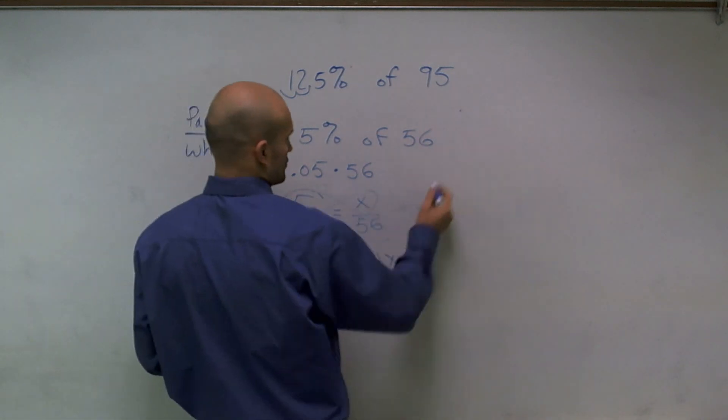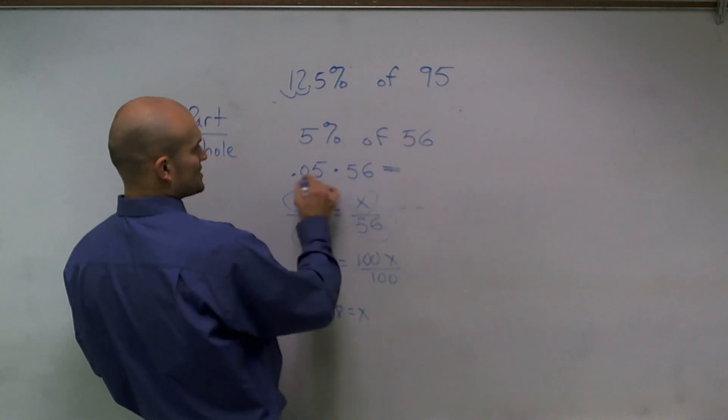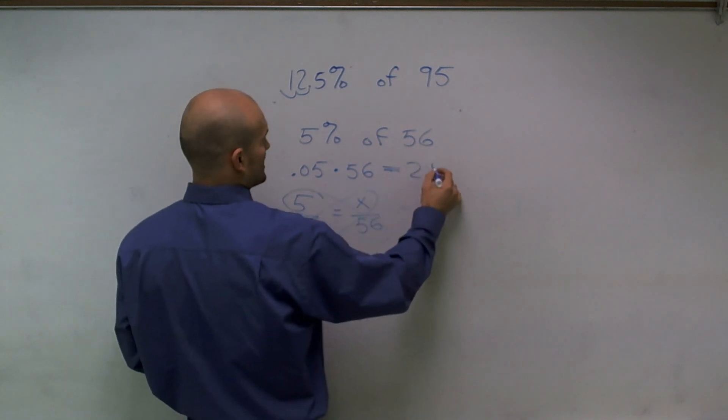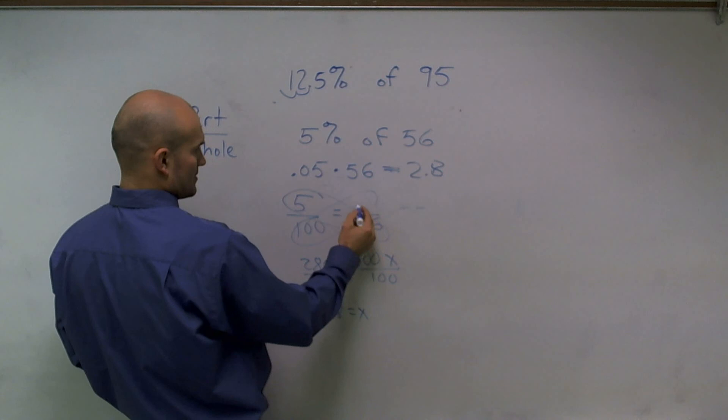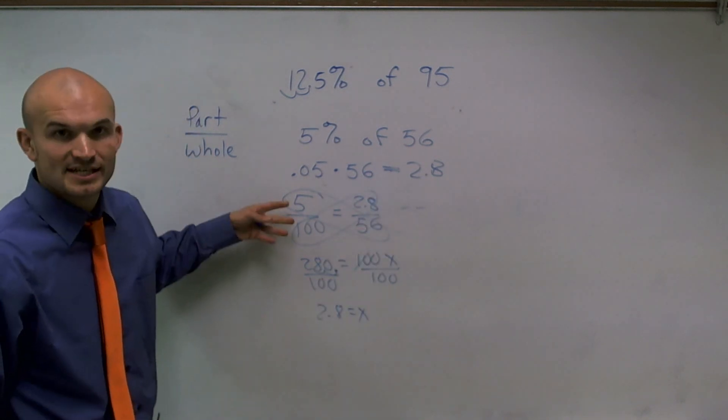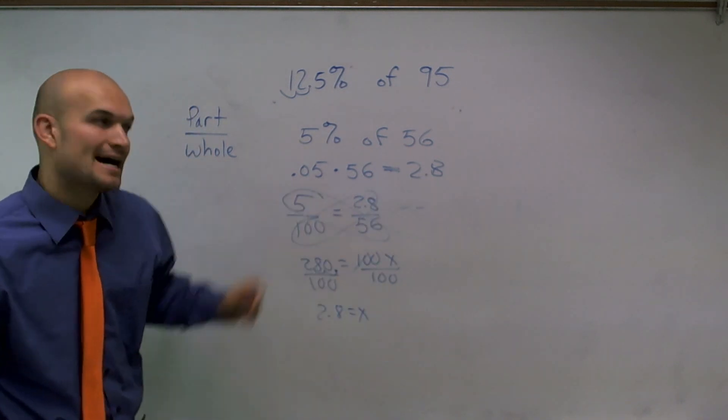Meaning, so I multiply here, 0.05 times 56 equals 2.8. Meaning, 5 out of 100 is equivalent to 2.8 out of 56.